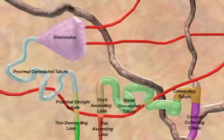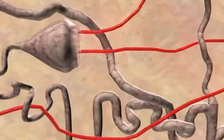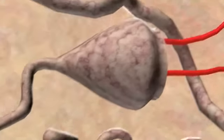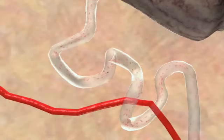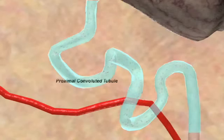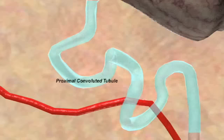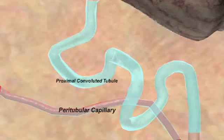Each section of the nephron has a different morphology of cells making up the single cell wall, which causes differences in water permeability and ion transport. The first section of the nephron is called the proximal convoluted tubule. The proximal convoluted tubule is highly permeable, and about 65% of the filtered sodium and water leak out to be reabsorbed into the nearby capillaries.